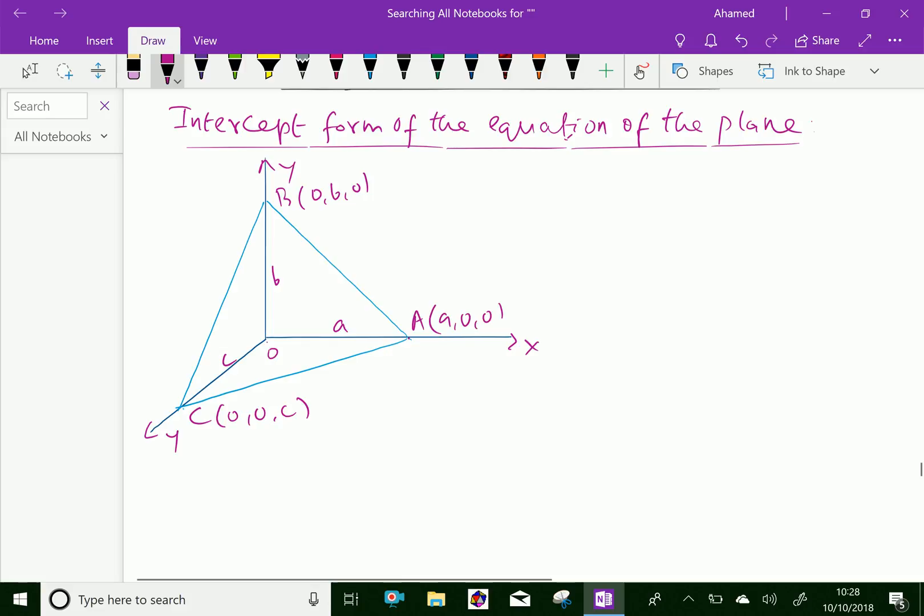Let the equation of the plane ABC be given as P times X plus Q times Y plus R times Z plus S equals 0.